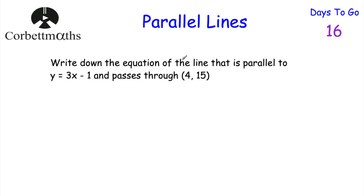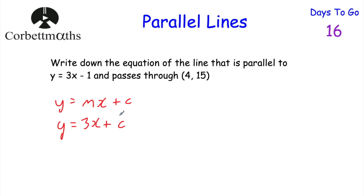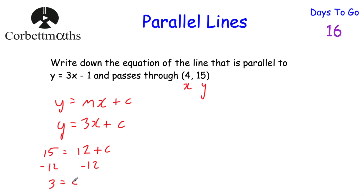Okay, let's have a look at another one. Write down the equation of a line that's parallel to y equals 3x minus 1 and passes through the point 4, 15. Feel free to press pause. We're looking for y equals mx plus c. It has to have a gradient of 3 because it's parallel, so y equals 3x plus c. The point it passes through is 4, 15 — x-coordinate 4, y-coordinate 15. Substituting: 15 equals 3 times 4, which is 12 plus c. Take away 12 from both sides: 15 minus 12 is 3, so c equals 3. The equation is y equals 3x plus 3. And if you got that, well done.